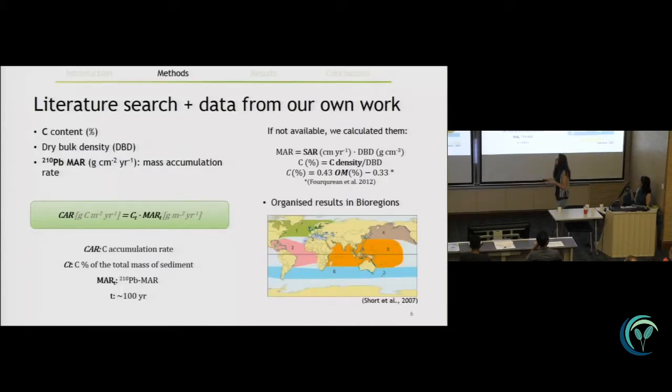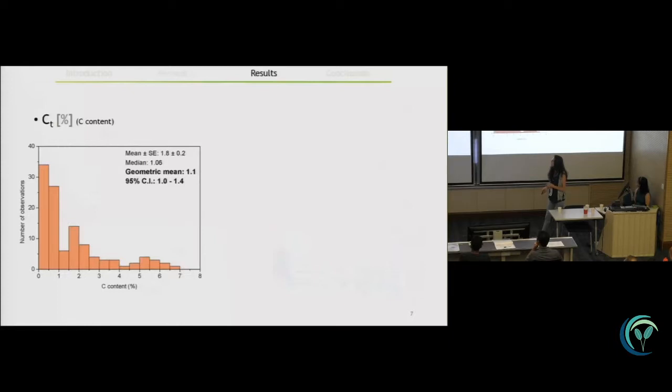So when we had all these estimates, we organized our results in bioregions. Two important measurements for this sink capacity in seagrass sediments is the carbon content. So the carbon content in seagrass sediments in our data set had a mean of about 2%. It was similar